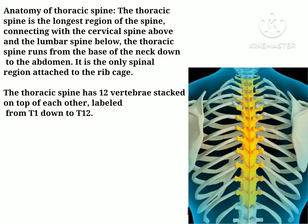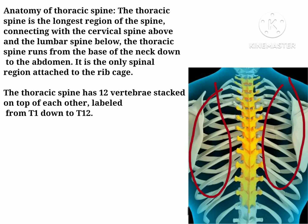The first thoracic vertebra, T1, is attached with cervical vertebra 7 (C7), and the last thoracic vertebra, T12, is attached with the first lumbar vertebra. We will discuss lumbar vertebra in our next topic. So this thoracic spine starts from the base of the neck down to the abdomen, and it is a region that attaches with the rib cage.